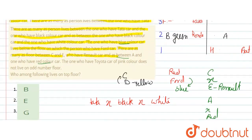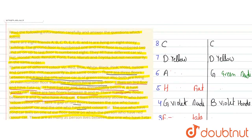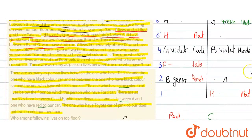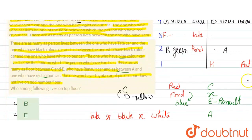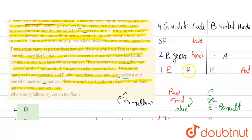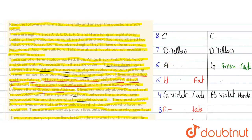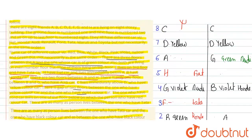The one who has the Toyota car has a pink color car and does not live on an odd-numbered floor — so Toyota/pink lives on an even floor. Looking at even floor positions, G already has Audi, so Toyota can be A or C. Also, C and E — where E has the Renault car — have as many floors between them as between A and the one with the red car.